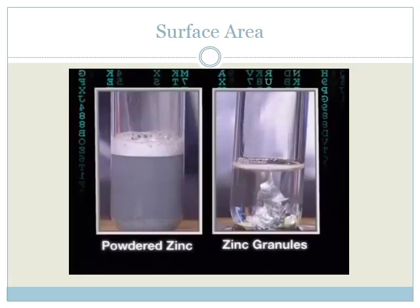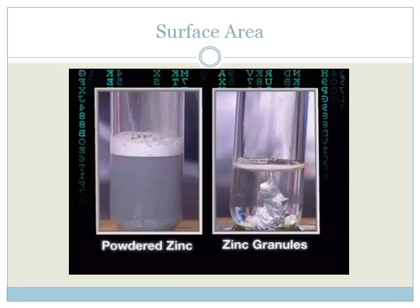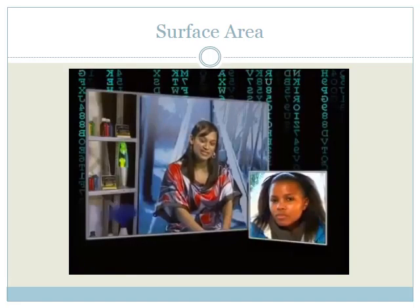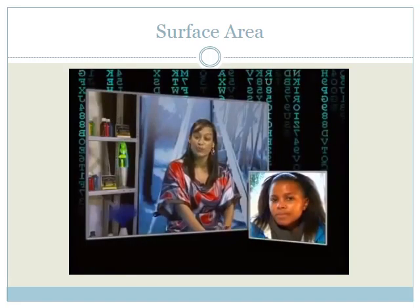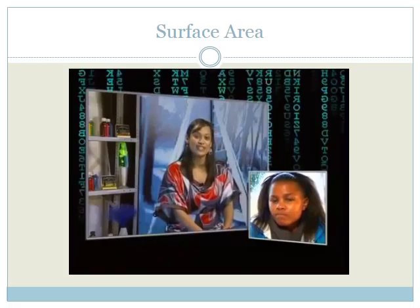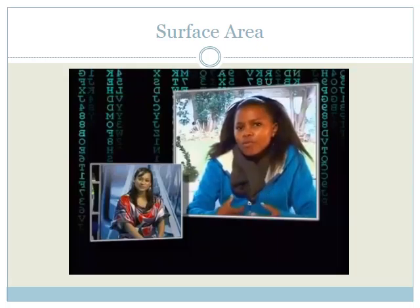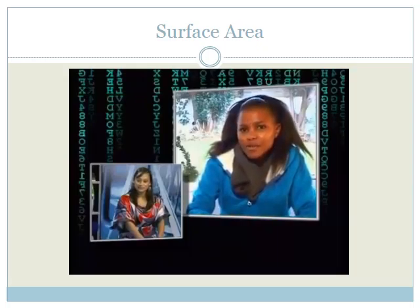Can you see that bubbles of hydrogen are forming more quickly in the test tube with the powdered zinc? This means that the rate of reaction for the powdered zinc is higher than for the zinc granules. It looks like there was more foam formed when the powdered zinc reacted than when the zinc granules did. Is that correct?